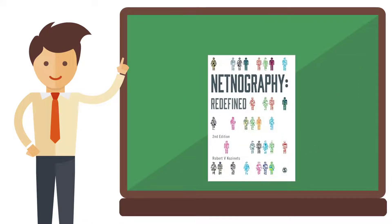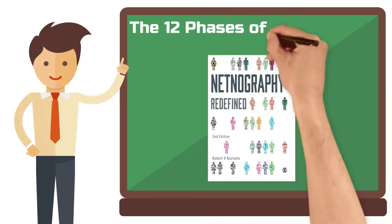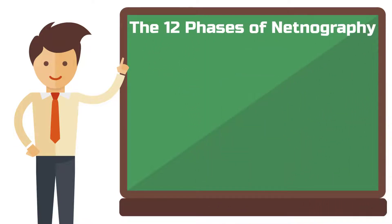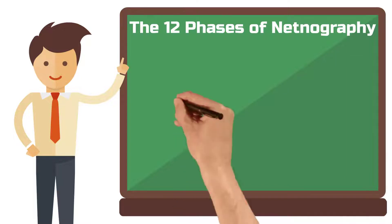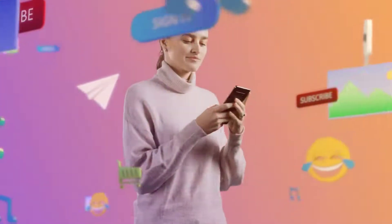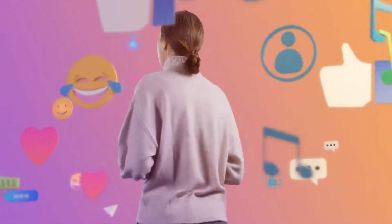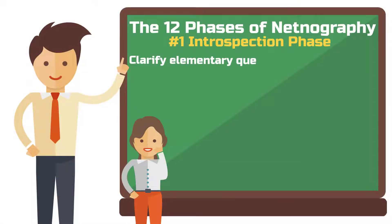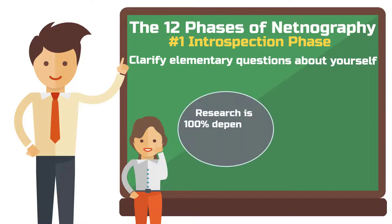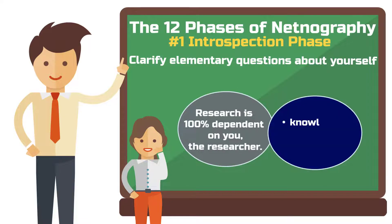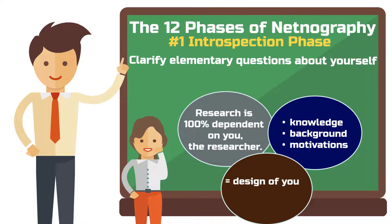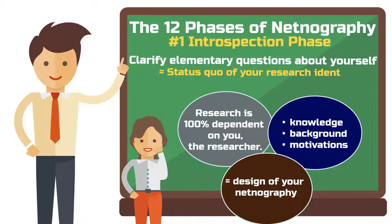In the second edition of his book from 2015, Kotzinets breaks down the netnographic research approach into 12 phases. Phase 1: The introspection phase. Before you get lost in the depths of Reddit, there are some fundamental questions about yourself you must address. This step is inherently tied to the nature of ethnography — this research is entirely dependent on you, the researcher. Your prior knowledge, background, and personal motivations will influence the design of your netnography. Document the current state of your prior knowledge so that you can describe and reflect upon it in your project.